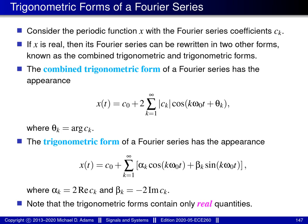In this course we very rarely use the combined trigonometric form or the trigonometric form for Fourier series. The reason is simply that we often need the generality of being able to handle complex-valued functions, and these trigonometric forms can only be applied when the functions involved are real valued.